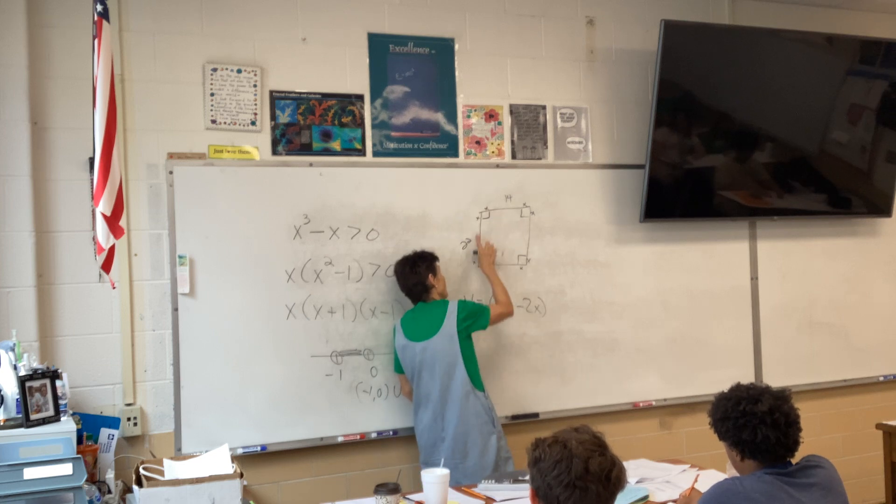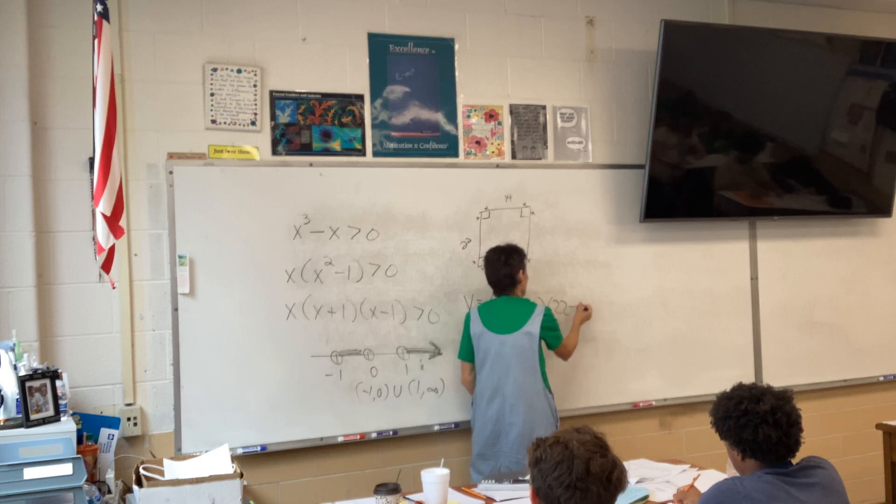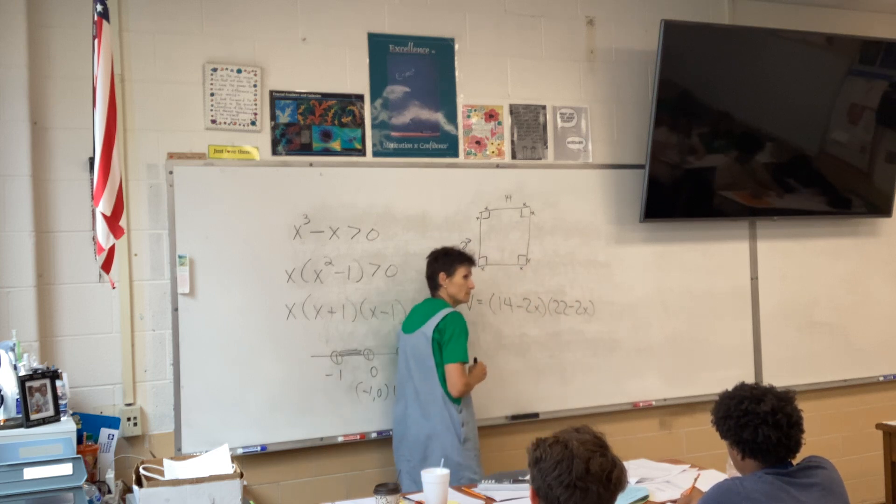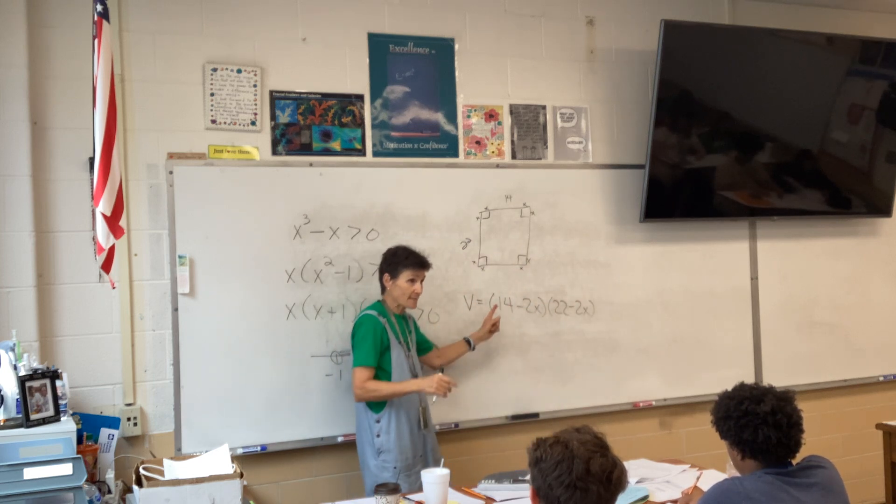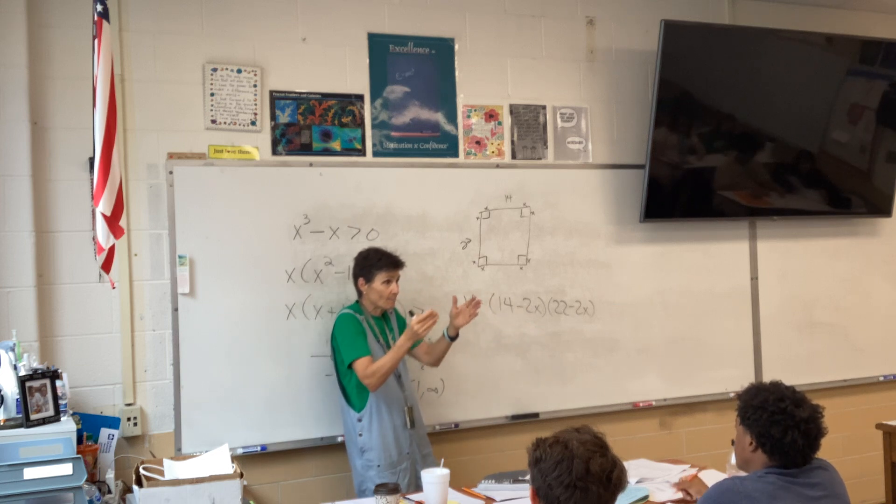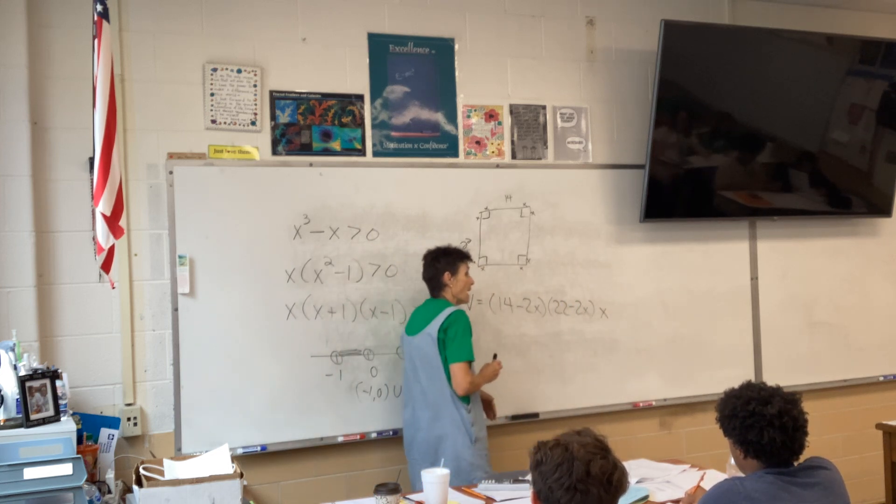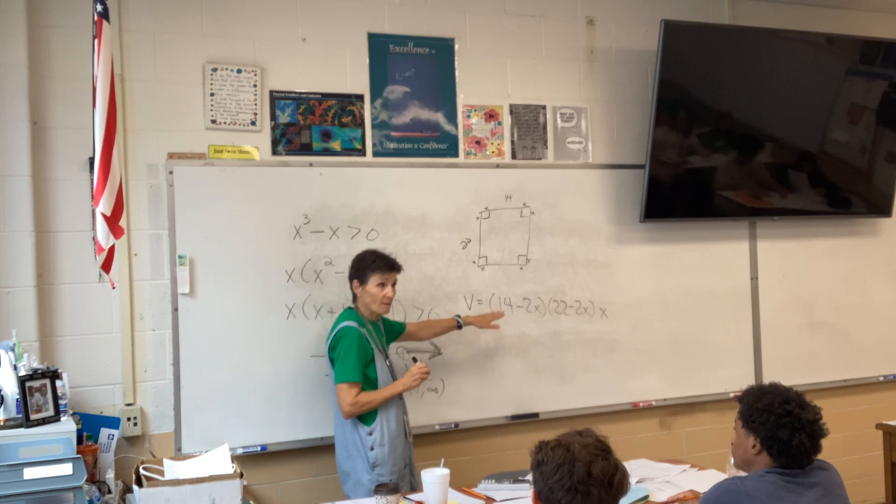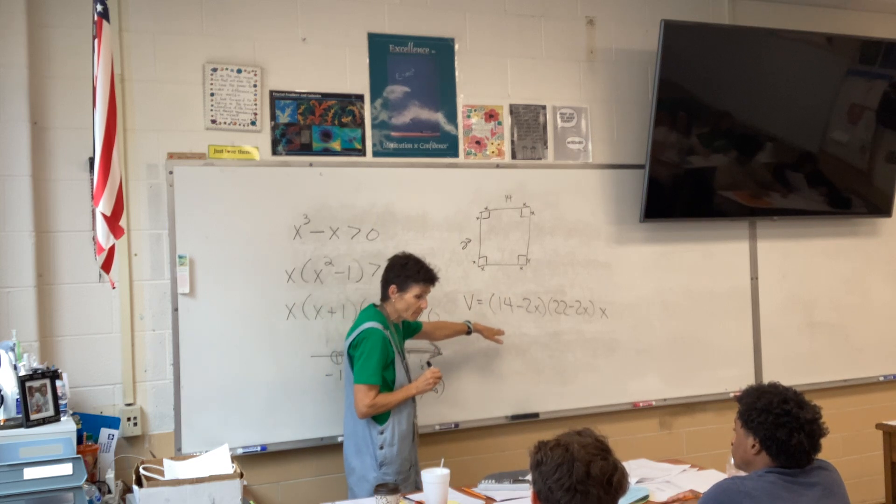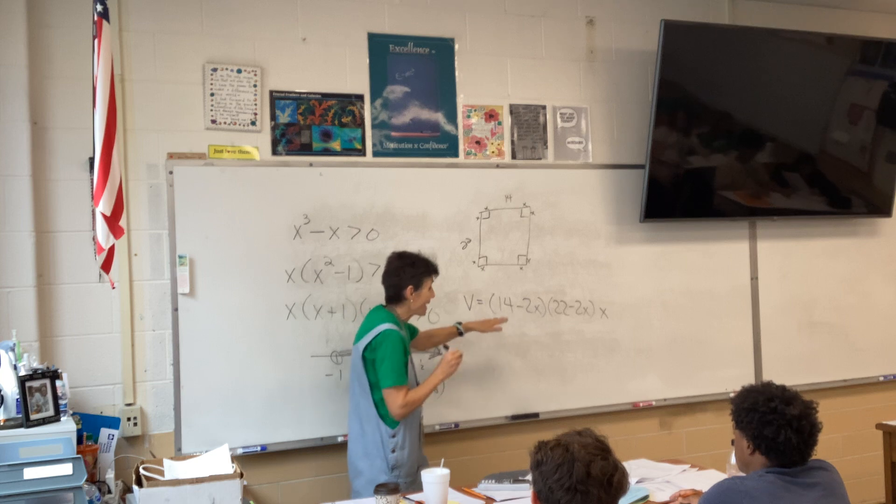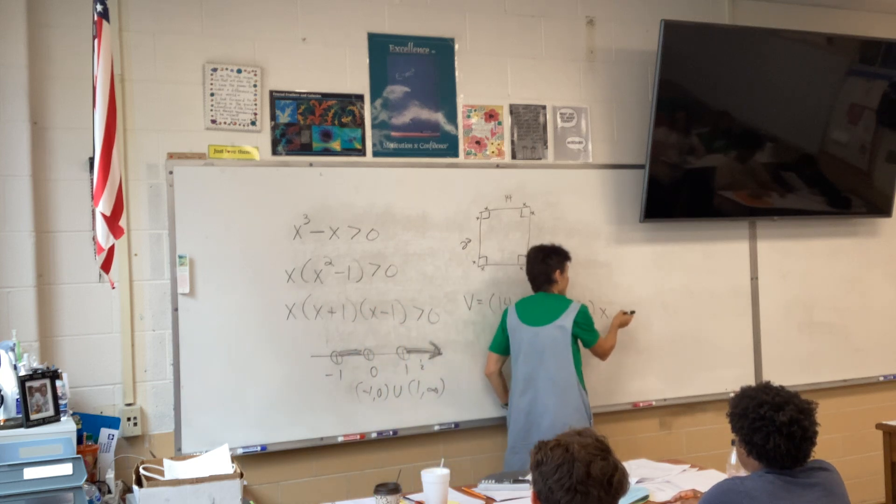Length times width times height. Now, keep in mind, the original paper was 14, but what did we do? Took out 2X. Cut an X off each side. So, that will be 14 minus 2X. The original paper was 22, but I took an X off each end.